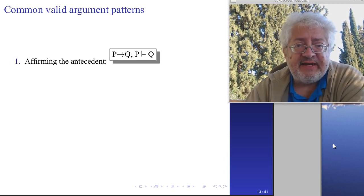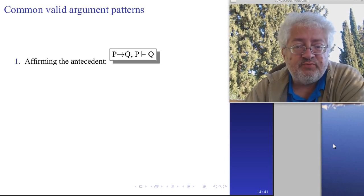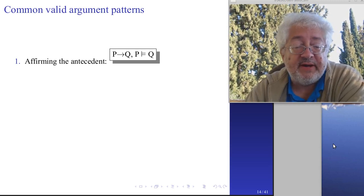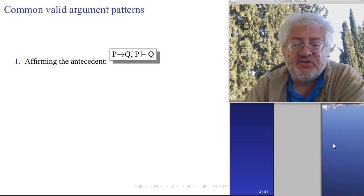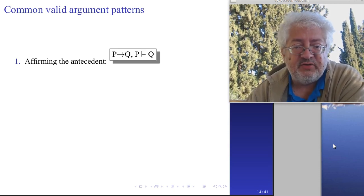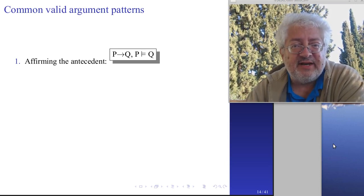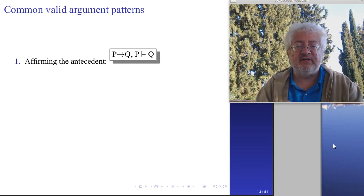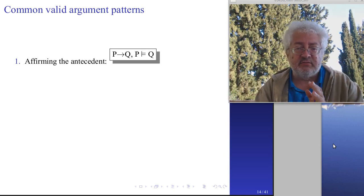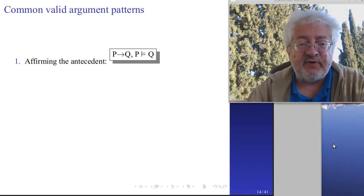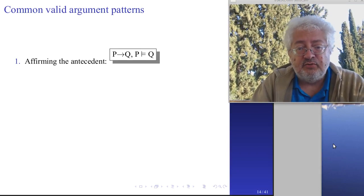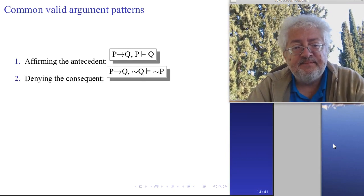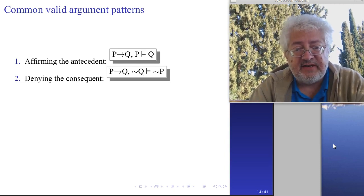Here are valid argument patterns known to be valid, which we will not prove now but will use. Affirming the antecedent: p implies q, p, therefore q. Denying the consequent: p implies q, not q, therefore not p. The hypothetical syllogism: a implies b, b implies c, therefore a implies c - easy to understand: if a implies b and b implies c, then a also implies c.